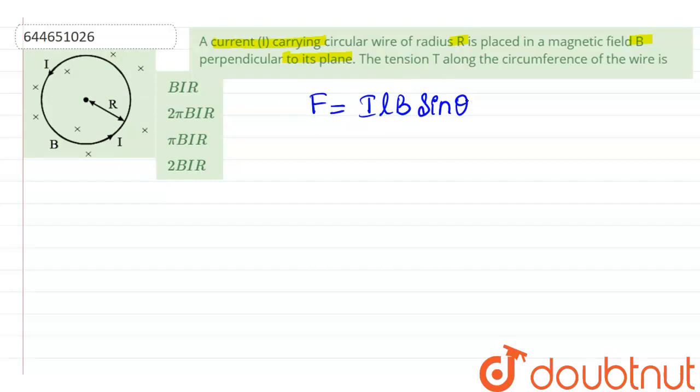Therefore, the magnitude of force depends upon the angle between length and magnitude of the magnetic field. Now, for this given circular wire,